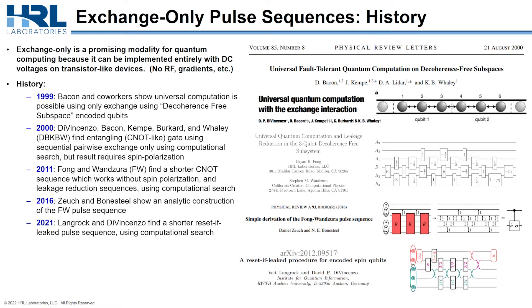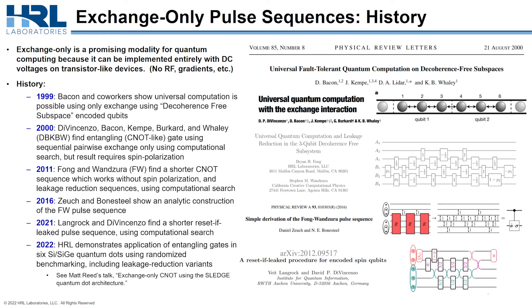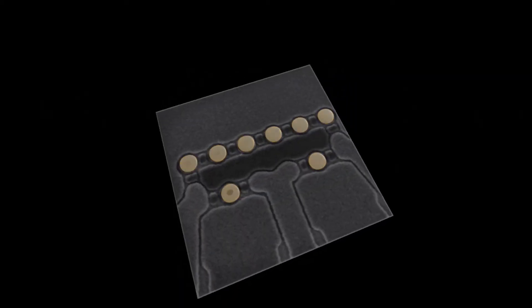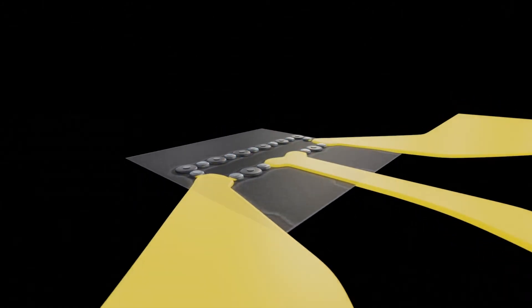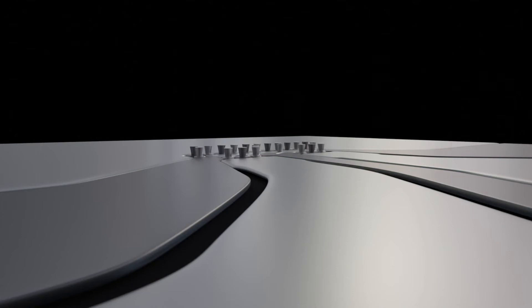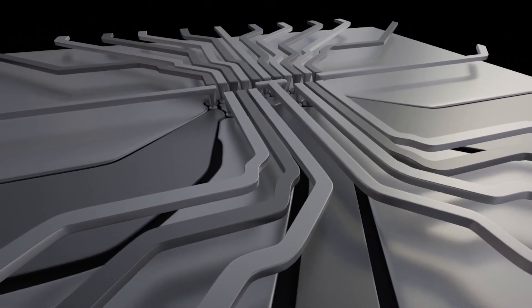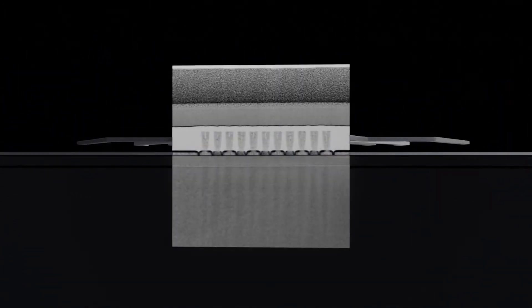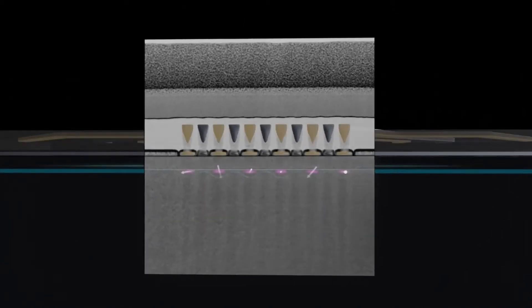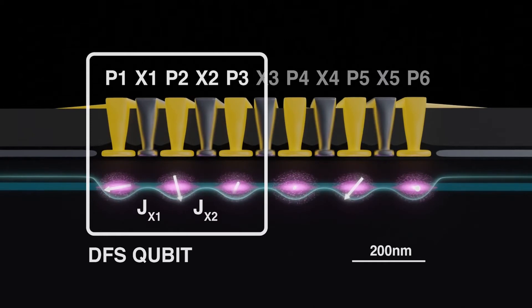The reason I'm talking about all this now is that at this conference, we are showing experimental demonstrations of these pulse sequences. As a preview of Matt Reed's talk, the way we do the experimental implementation of this exchange-only approach is with six dots. This is an SEM of six metal circles that define the potential for the underlying semiconductor, contacted via vertical VIA-like structures connecting to the electronics. If we zoom into a cross-section with a TEM, you can see the vias and the dots, and underneath that the silicon-germanium quantum well which hosts the electrons.